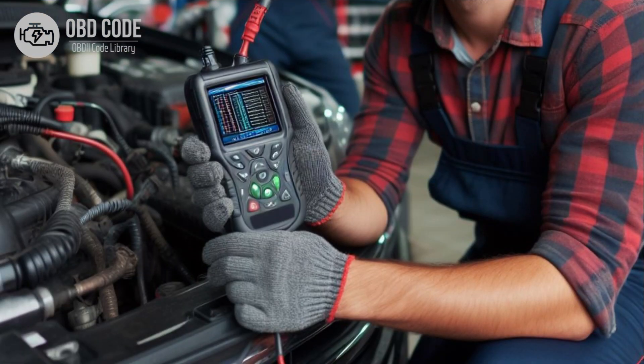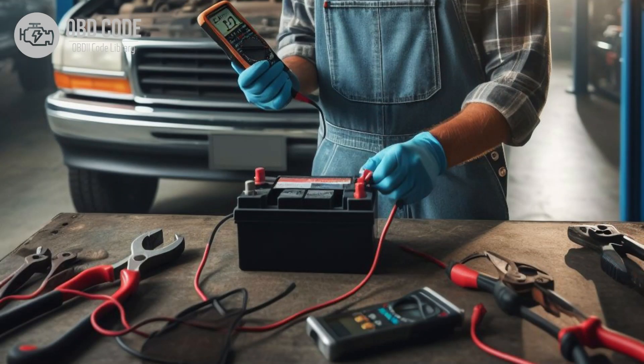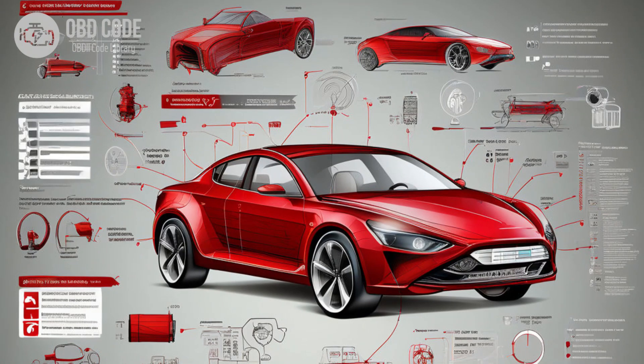3. Clear the trouble codes and perform a test drive to verify that the issue has been resolved. 4. If the code persists, further diagnosis may be required, including testing the voltage output of the ECM or PCM and the MIL control circuit. Ensure that the vehicle's battery is in good condition and fully charged, as low voltage can sometimes trigger false trouble codes related to the MIL.